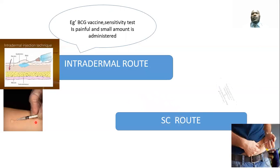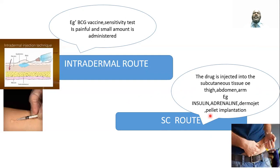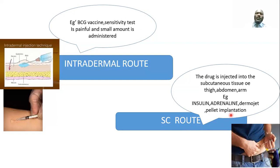We also have the subcutaneous route, whereby the drug is injected into the subcutaneous tissue — for example, into the thigh, abdomen, or arms. Common drugs given subcutaneously include insulin, adrenaline, desmogestrel, and pellet implants including biodegradable and non-biodegradable implants, specifically for testosterone administration in implantation.